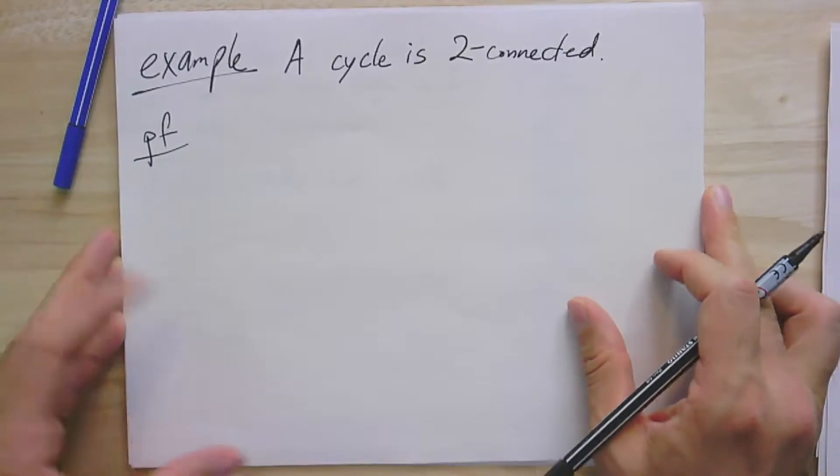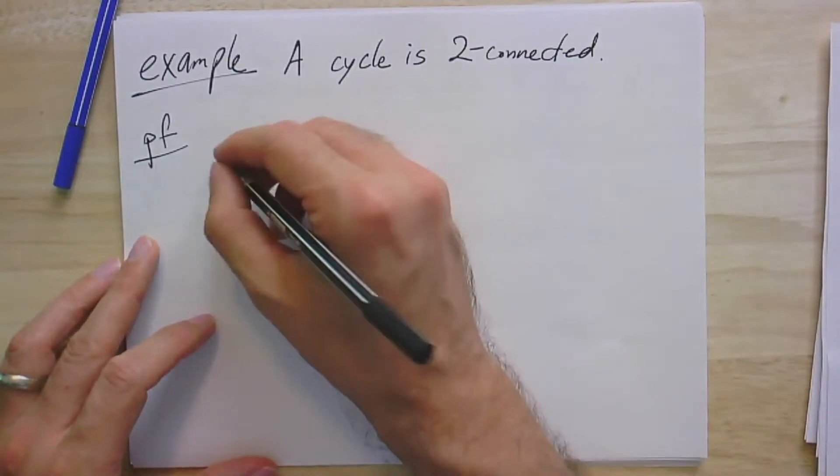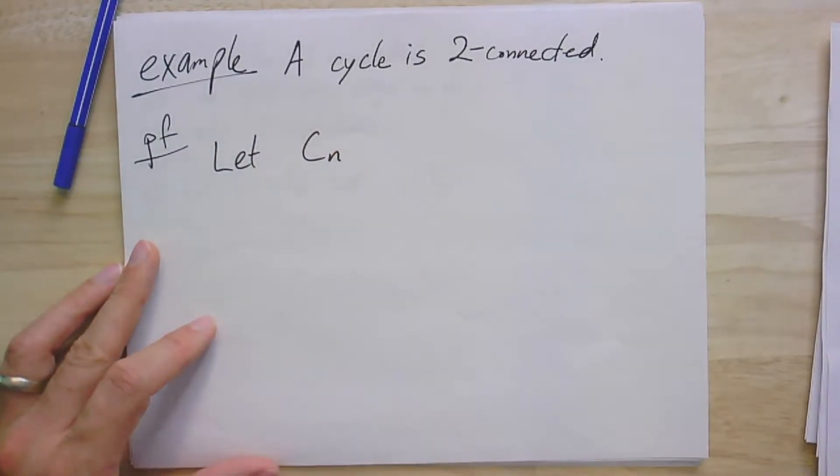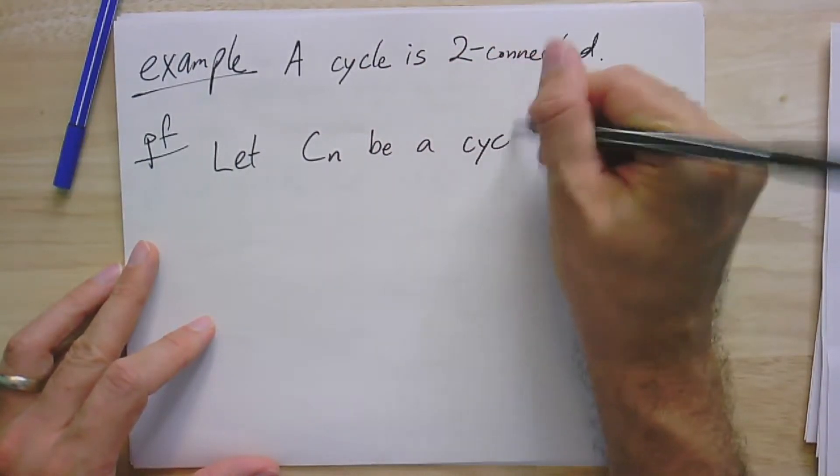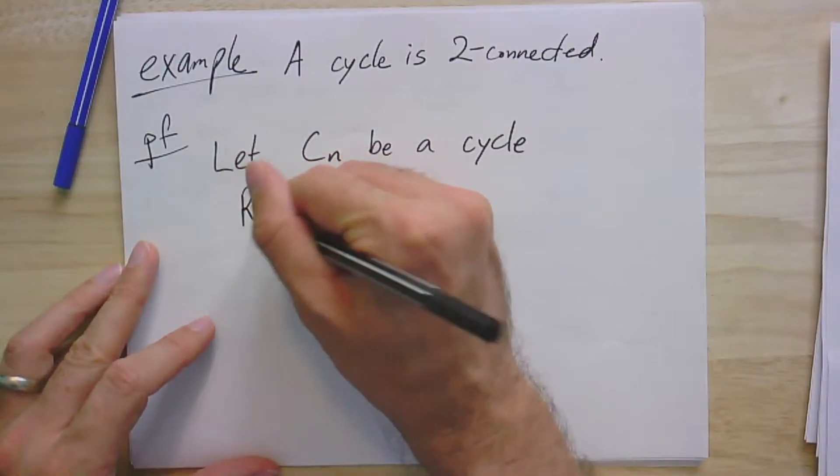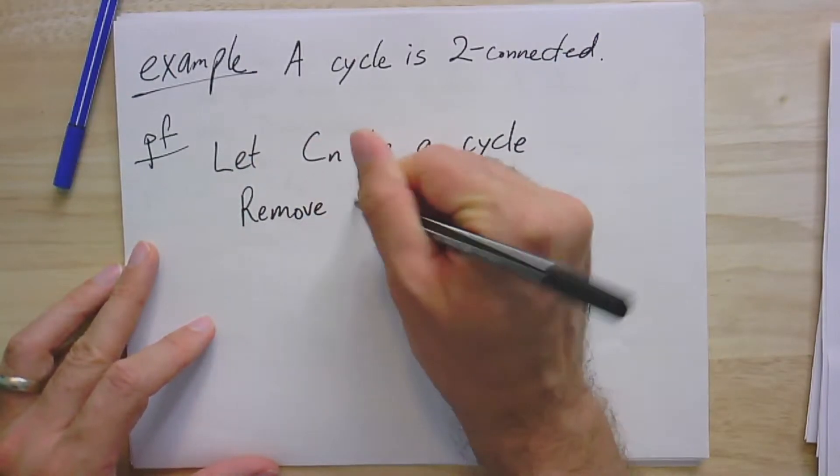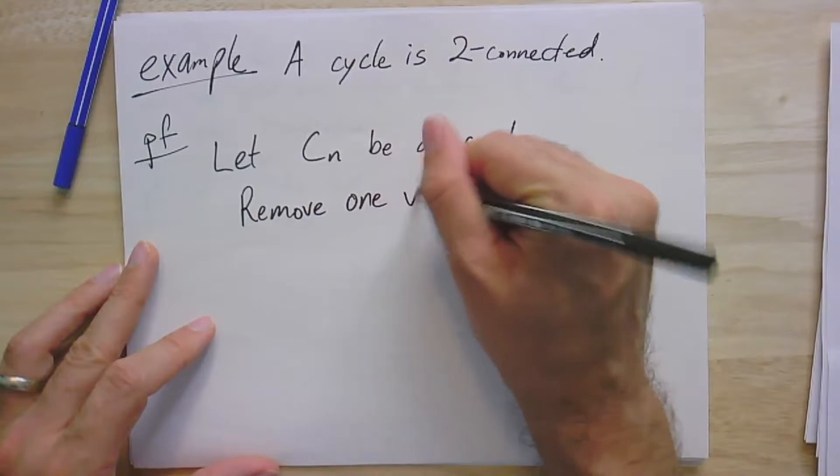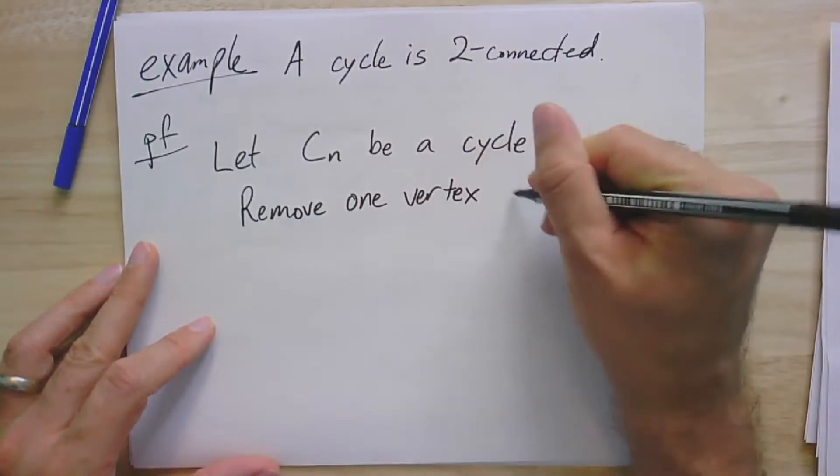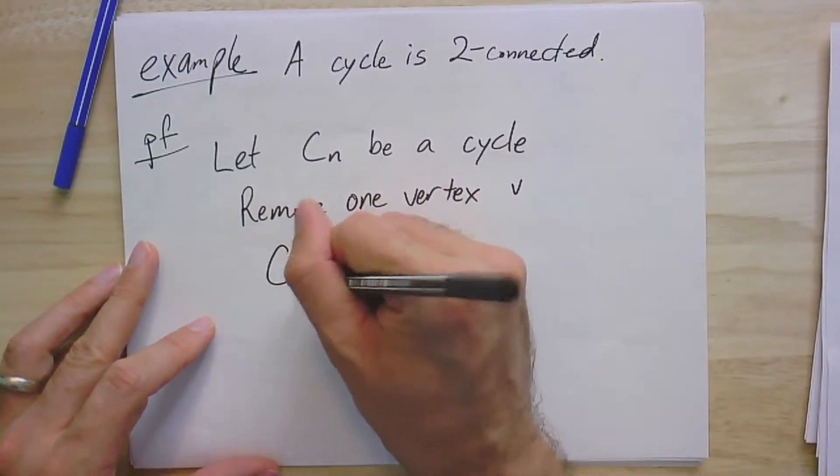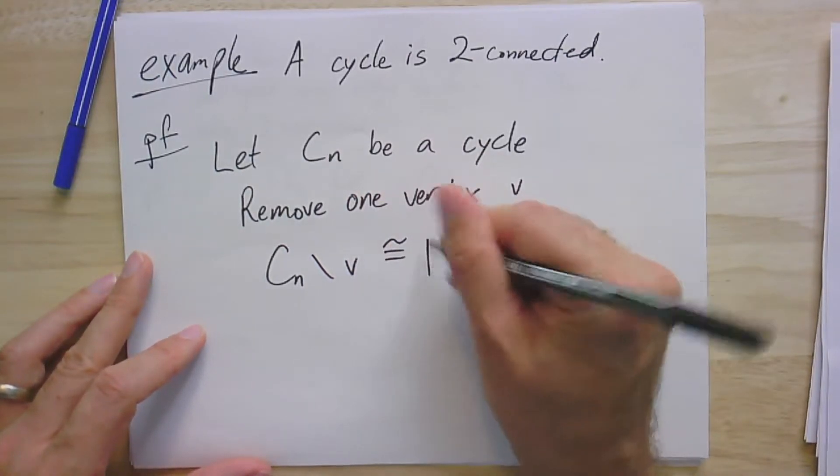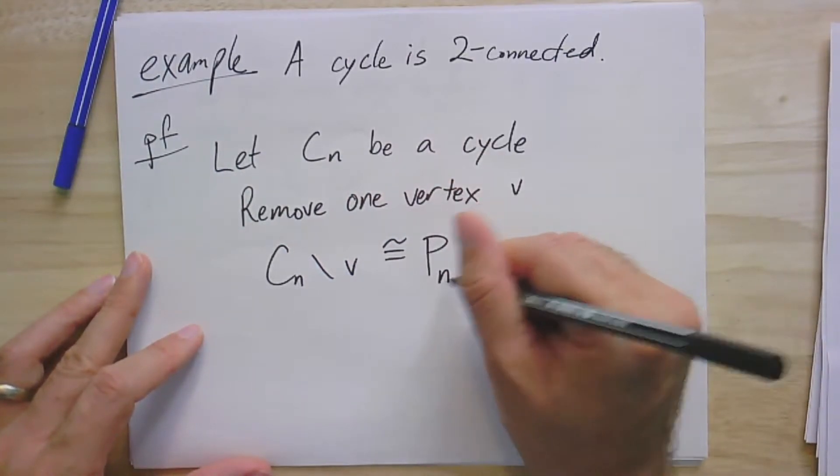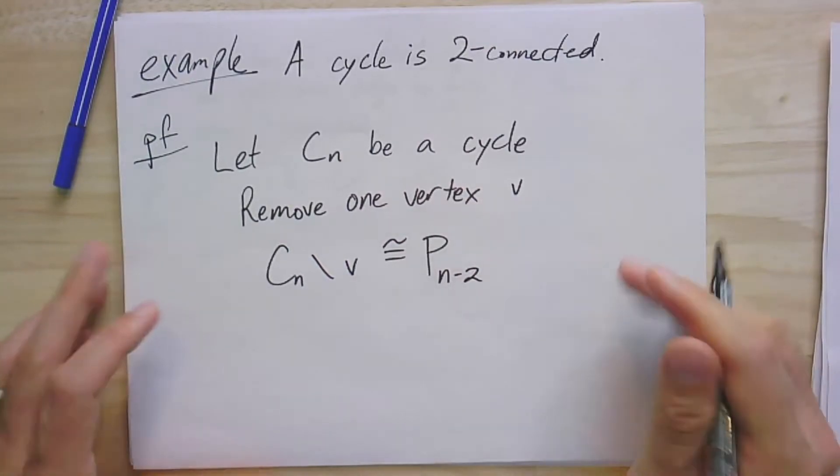If I have a cycle, removing any one vertex leaves me with a path. If I have an n-vertex cycle, and we remove one vertex, let's call that vertex V, so we have C_n minus V. No matter what it is, this graph is isomorphic to just a path of n minus two edges.